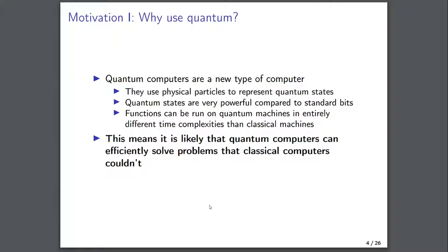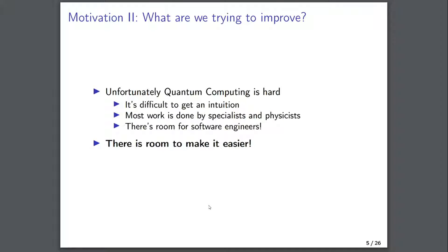Why are we using quantum at all? The main argument is simply that there is a rationale that quantum computers can efficiently solve problems that a classical computer could not, because their base part — the quantum bit or qubit — is more powerful than a classical bit. The difficulty is that it relies on exploiting the fundamental properties of the quantum computer, and it's very difficult to do this. It's difficult to get an intuition, and it's currently only really done by quantum computing experts.